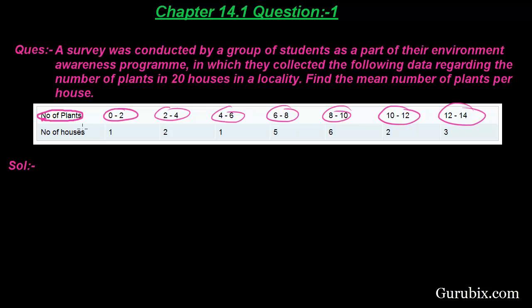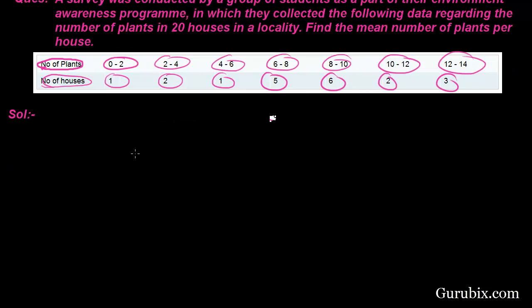And the second row is number of houses, which is our fi, which is 1, 2, 1, 5, 6, 2, 3. Now we have to find the mean of number of plants per house.